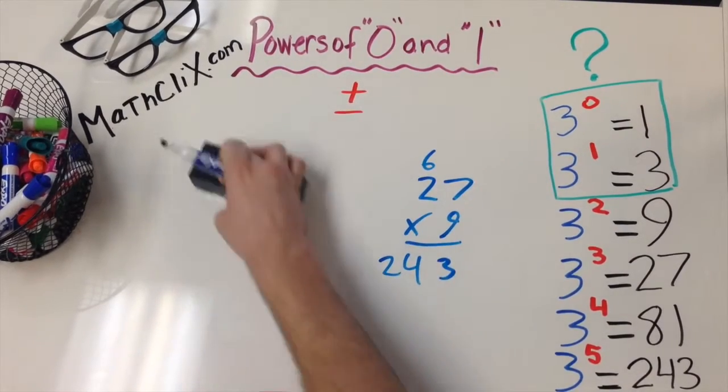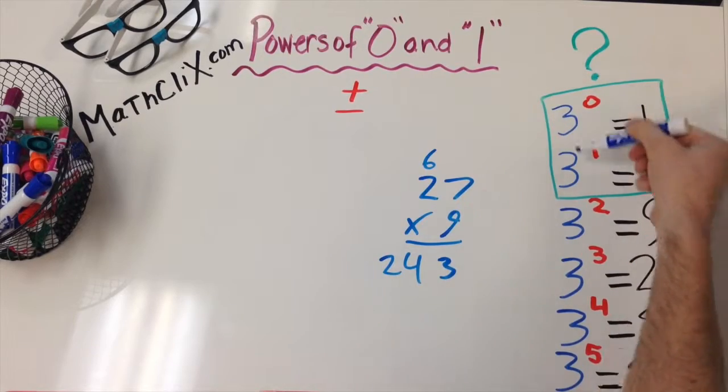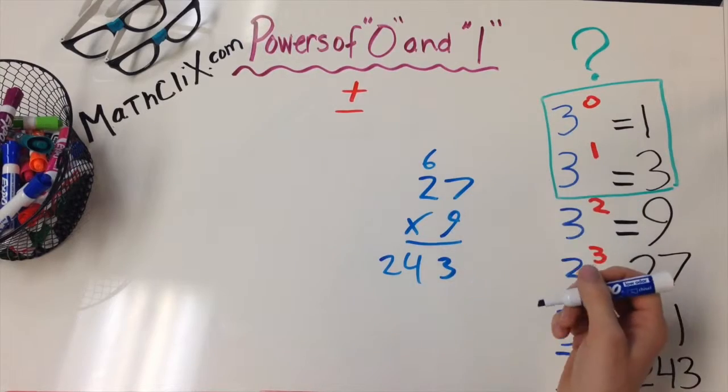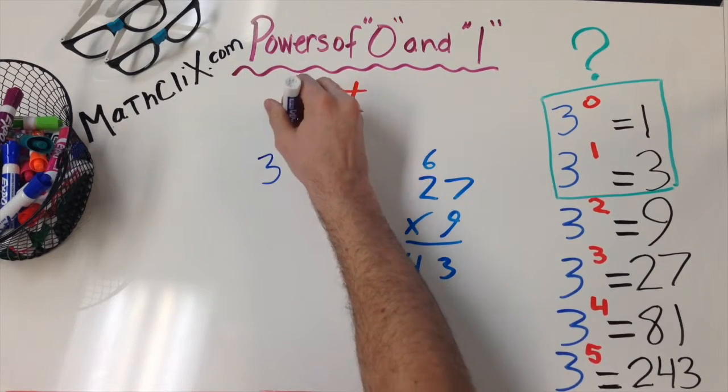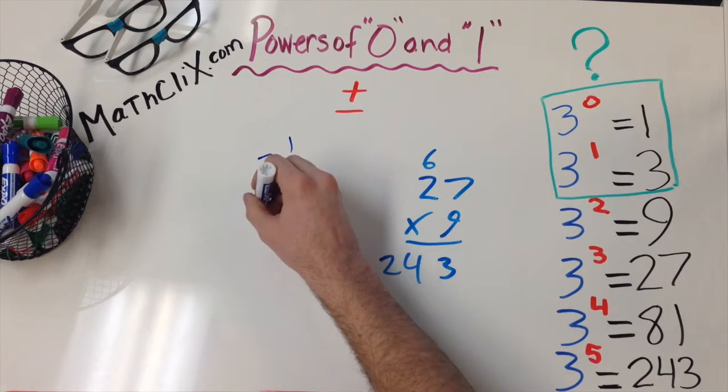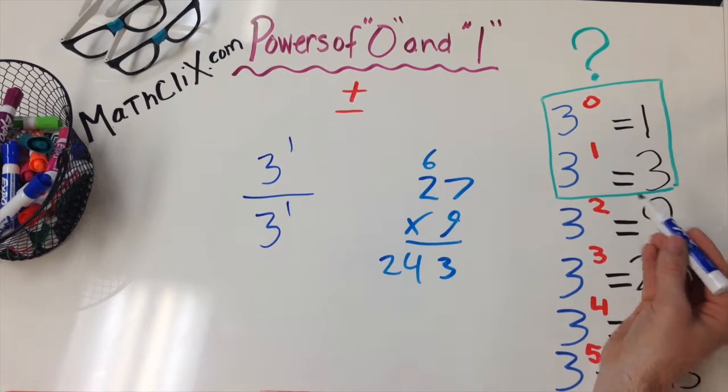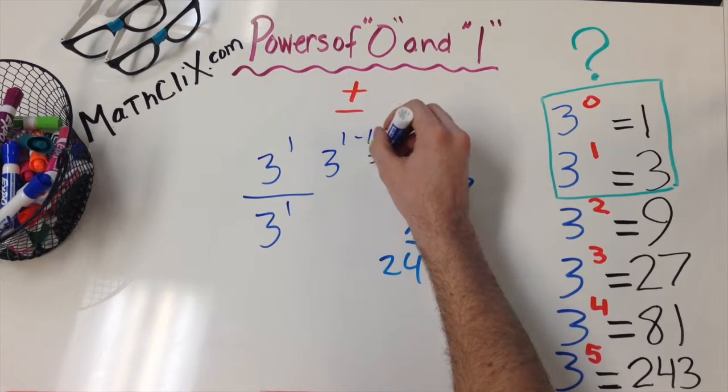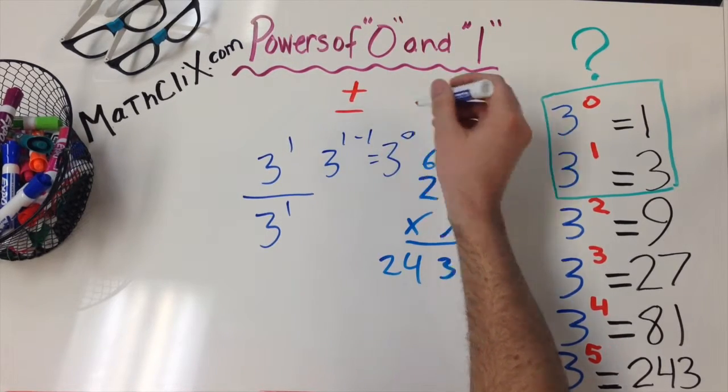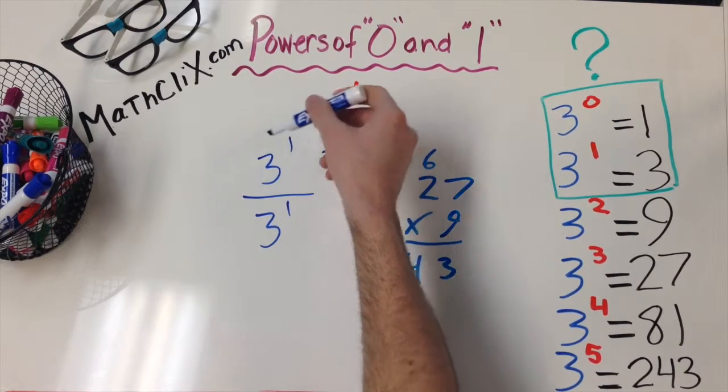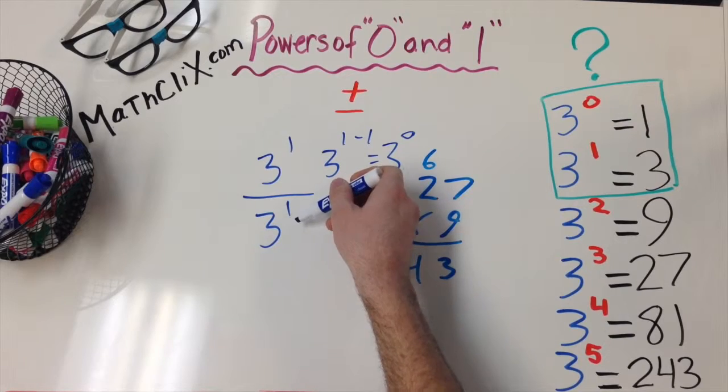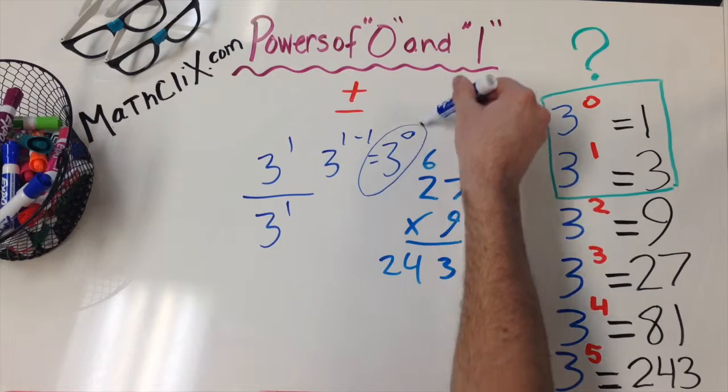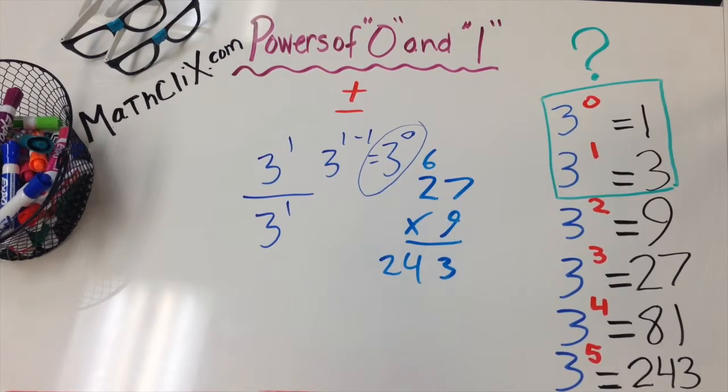So, why does that matter for these? Well, 3 to the 0 can really be thought of as 3 to the 1st power divided by 3 to the 1st power, which comes out to 3 to the 1 minus 1 equals 3 to the 0. We know any numerator over its identical denominator equals 1. This is why any base raised to the power of 0 equals 1.